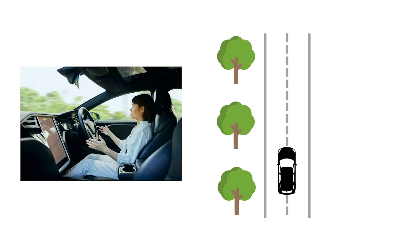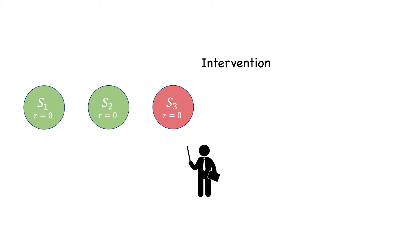Consider the problem of training a policy for autonomous driving vehicles. If the car drives off the road, it can be hard to know what the best way to provide corrections is. The key insight we leverage is that the decision to intervene itself can provide a reward signal for reinforcement learning, and it is often easier to know when to intervene than what the most optimal intervention policy is. In this work, we present the method of using reinforcement learning with user intervention signals themselves as rewards.